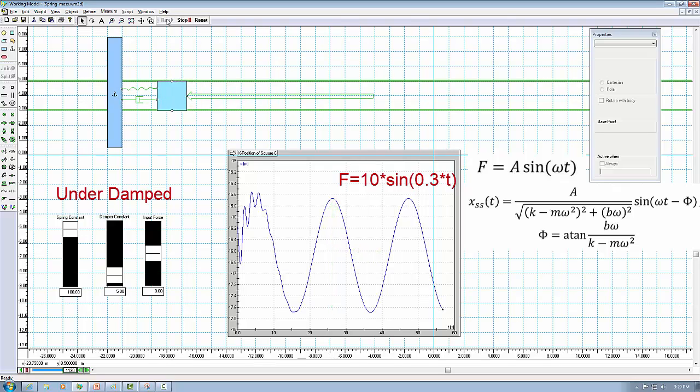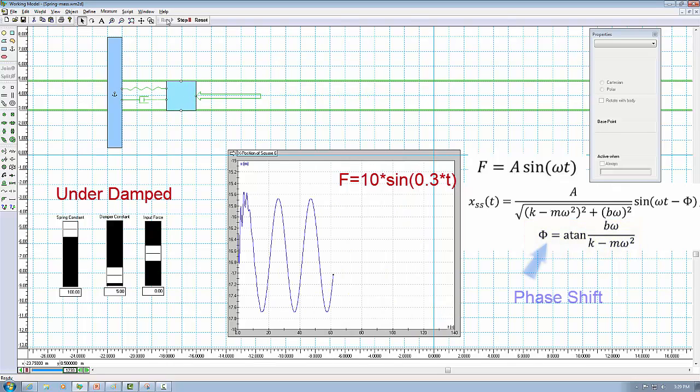You might also wonder what the angle we calculate from the formula is. It means the phase shift of the output compared to the input. It is hard to see from the figure, but if you look at the movement of the mass, it is not in sync with the force direction. This difference is described by an angle shift.